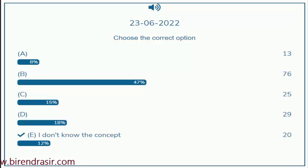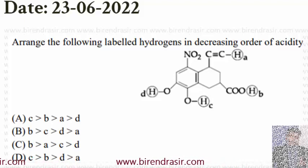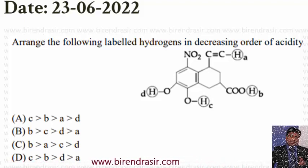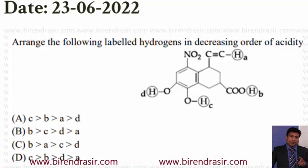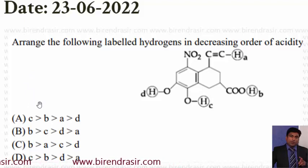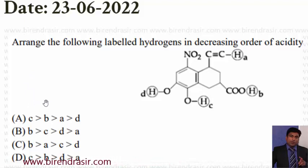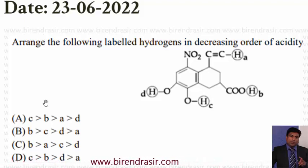Let's see what is the right answer. Many times earlier I have told you that when the question comes about the comparison of acidic strength, it is very very important to know the category. I have given you a comparison of different categories like sulfonic acid, more acidic than carboxylic acid, more acidic than phenol, more acidic than water, alcohol, terminal alkyne, ammonia, terminal alkene, and then alkene.